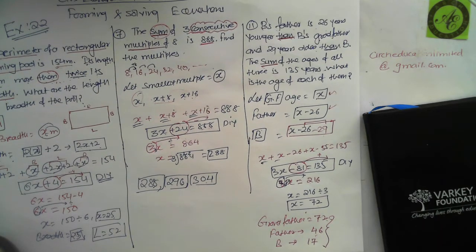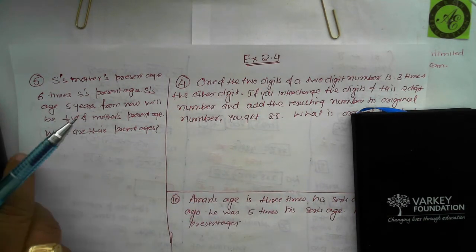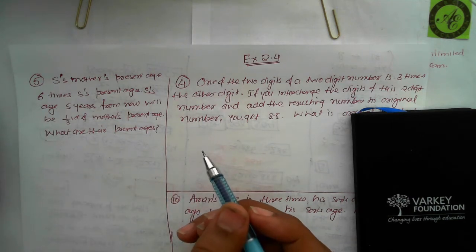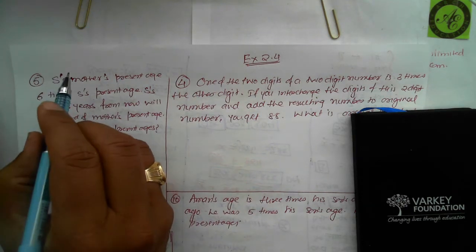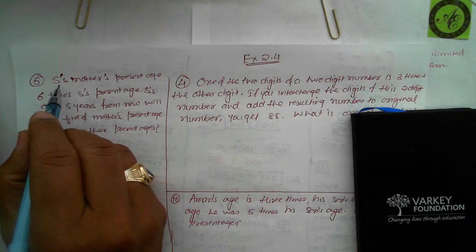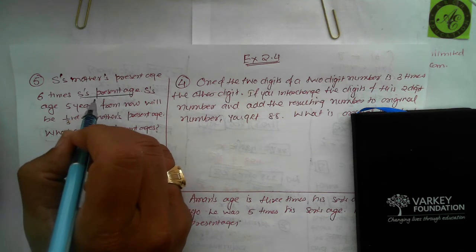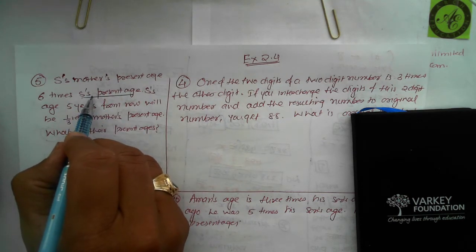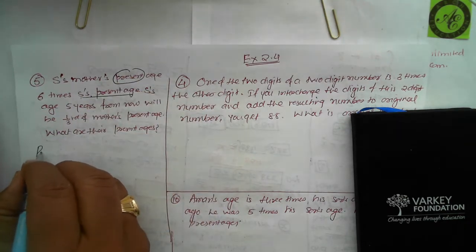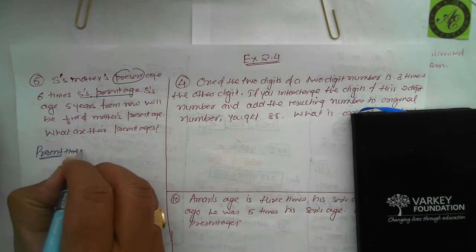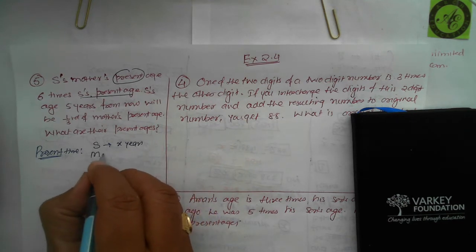We move on to exercise 2.4 where the variable appears on both sides of the equation — slightly more complicated. Reading the statement very carefully: S's mother's present age is six times S's present age. There's no word 'than', but S's age is clearly the reference point. Let S's age be x years, so mother's age is 6x years.